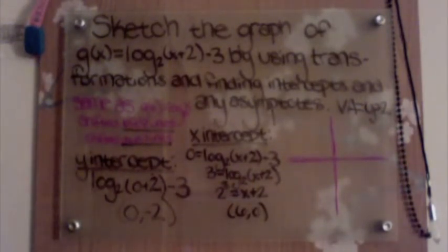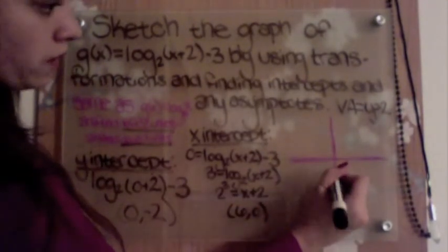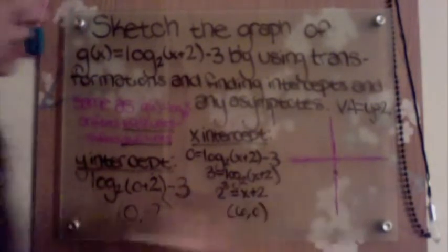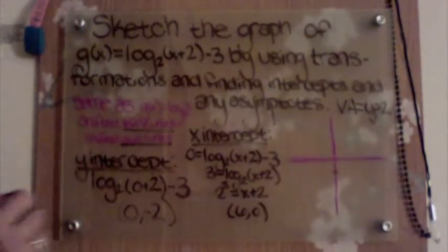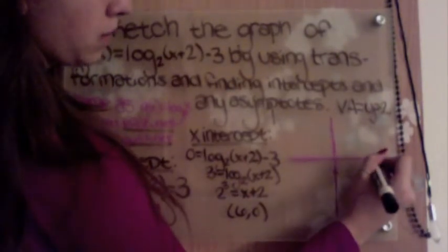Now all that's left to do is graph it. So we have (0, -2) on the y-axis, which is right about here. And then we have (6, 0) on the x-axis, which is right about here.